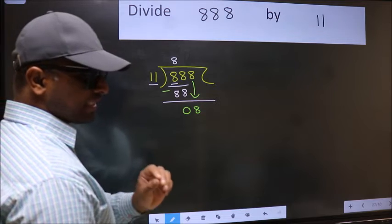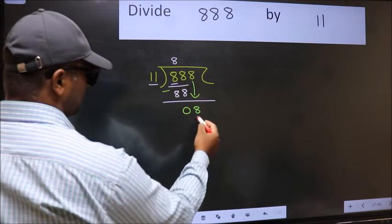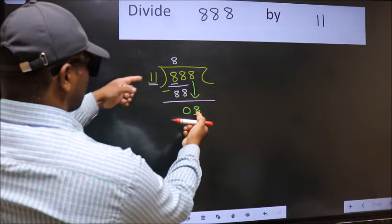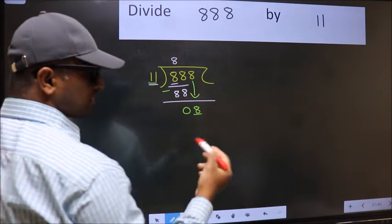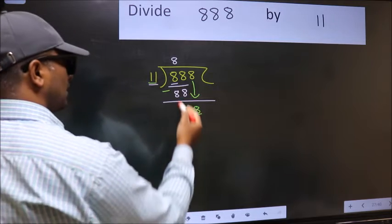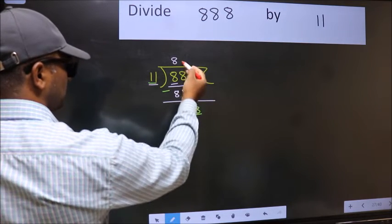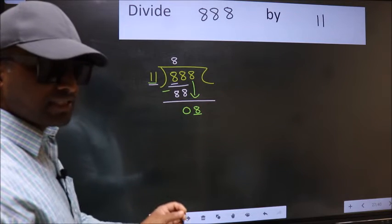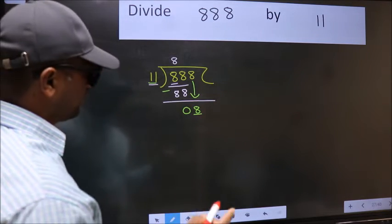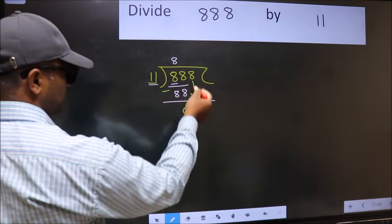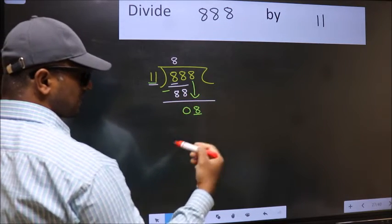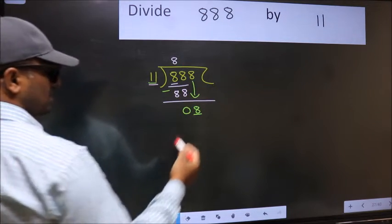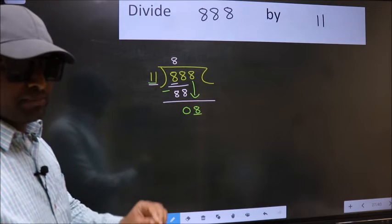After this step, the mistake happens. Here we have 8 and 11. Since 8 is smaller than 11, what many do is they directly put a dot and take 0 — which is wrong. Why is it wrong? Because you just brought this number down, and in the same step you want to put dot and take 0, which is wrong.